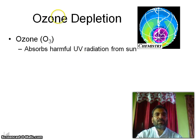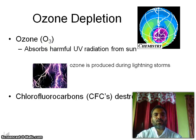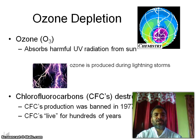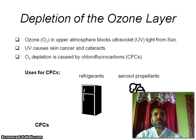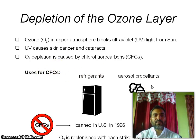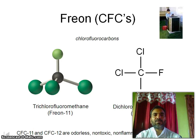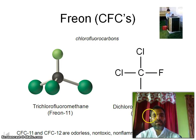Ozone (O3) absorbs harmful UV radiation from the sun. Ozone is produced during lightning storms. Chlorofluorocarbons (CFCs) destroy ozone; CFC production was banned in 1977. Depletion of the ozone layer — ozone in the upper atmosphere blocks ultraviolet light from the sun. UV causes skin cancer and cataracts. O3 depletion is caused by chlorofluorocarbons, used in refrigerators, aerosols, and propellants — banned in the US. Examples of CFCs include trichlorofluoromethane (Freon-11) and related compounds. These are odorless, non-toxic, non-flammable, and very stable.